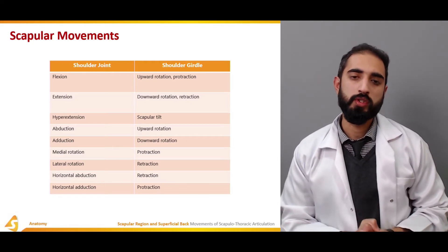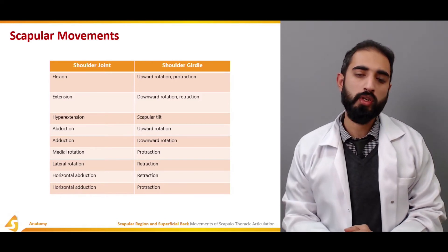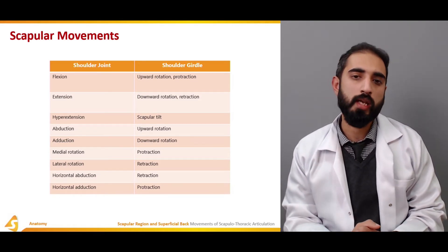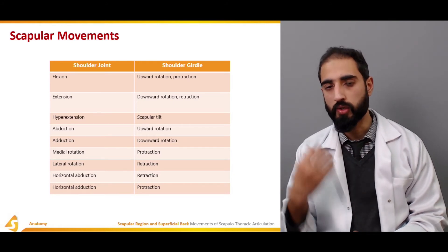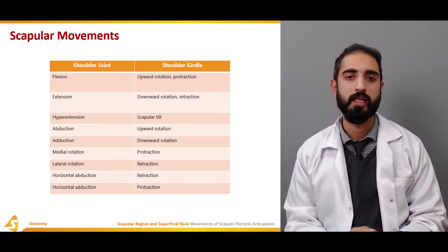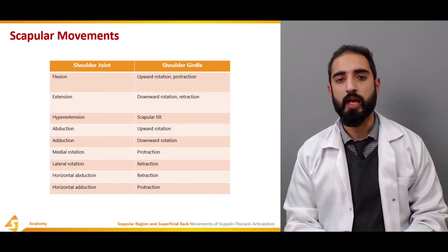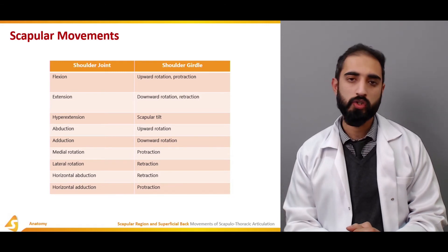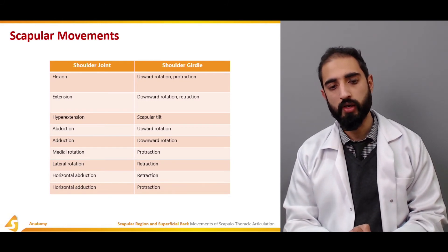There is a clear association between glenohumeral joint movements and scapulothoracic articulation movements. With flexion at the glenohumeral joint, there is upward rotation and protraction of the scapula. With extension, there is downward rotation and retraction of the scapula. With hyperextension beyond zero degrees, there is scapular tilting where the inferior angle tilts posteriorly and the superior angle tilts anteriorly. With abduction there is upward rotation, and with adduction there is downward rotation. Lateral rotation causes scapular retraction, and medial rotation causes scapular protraction.